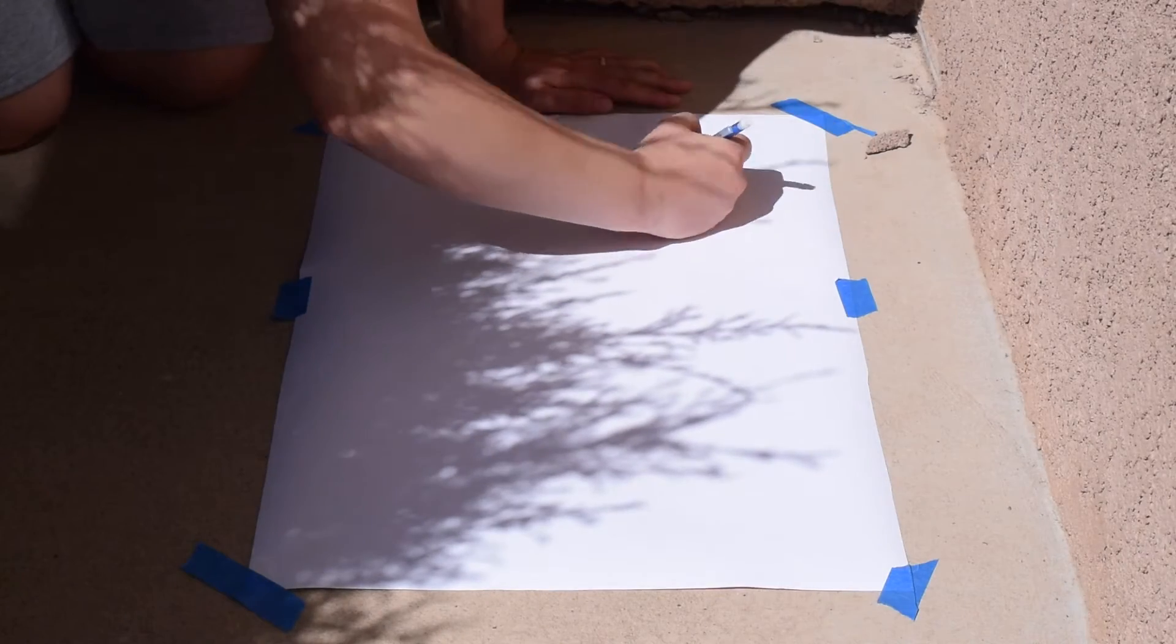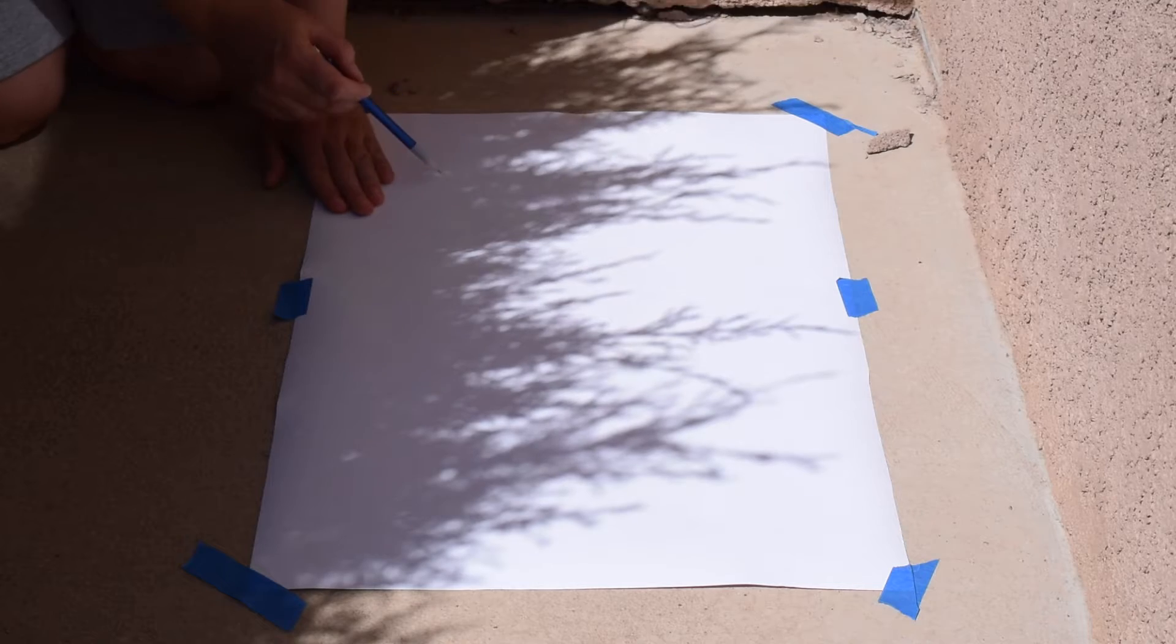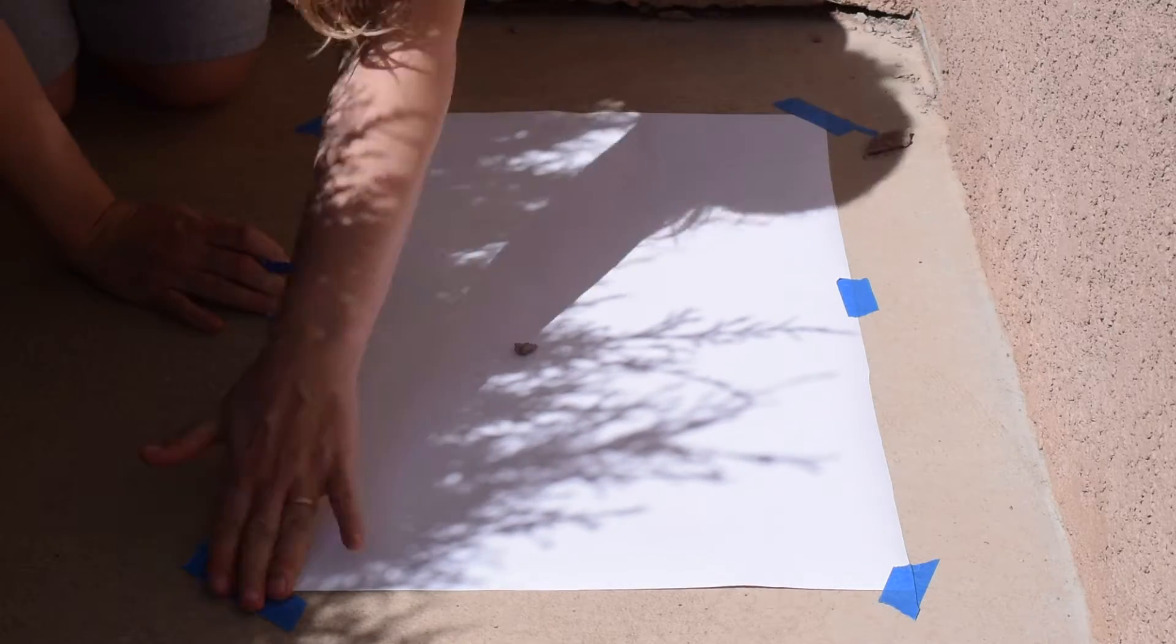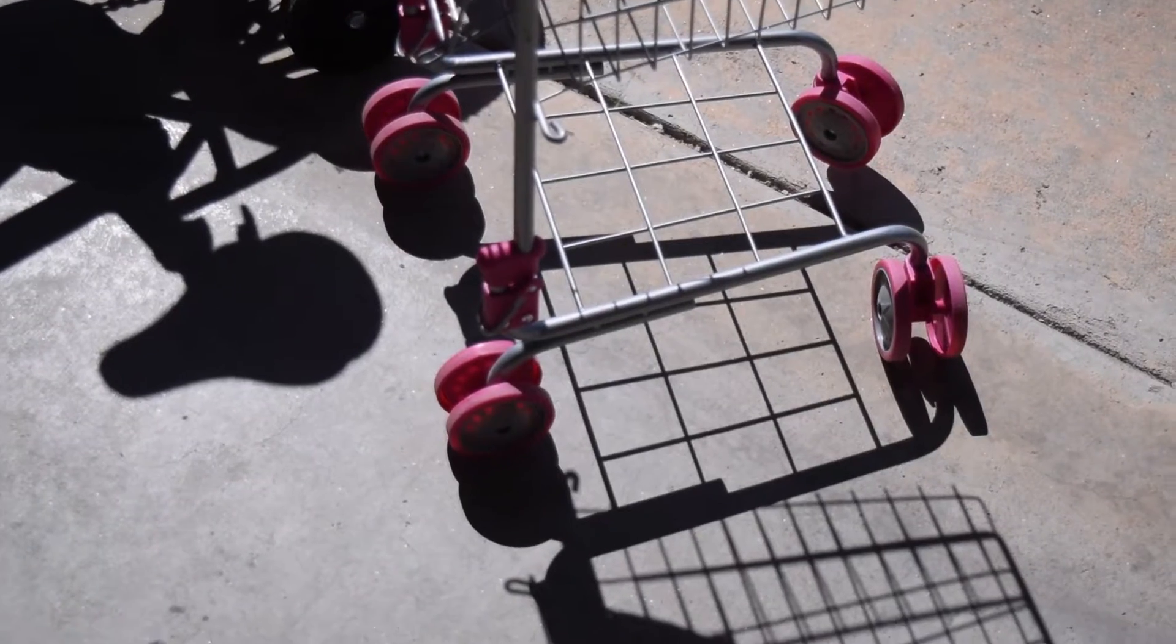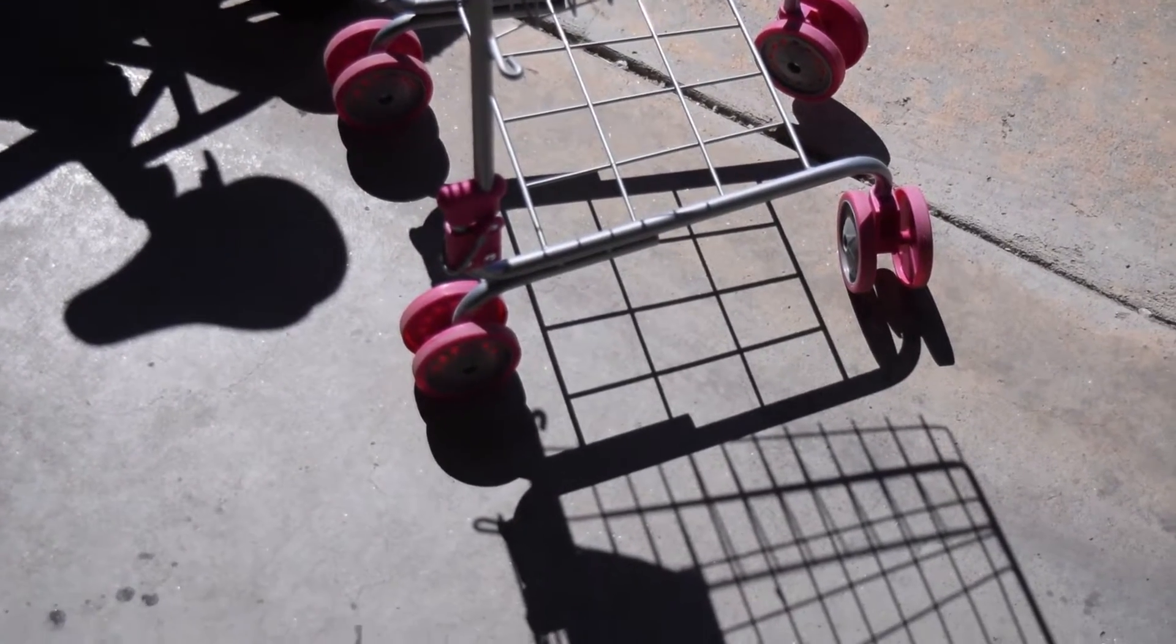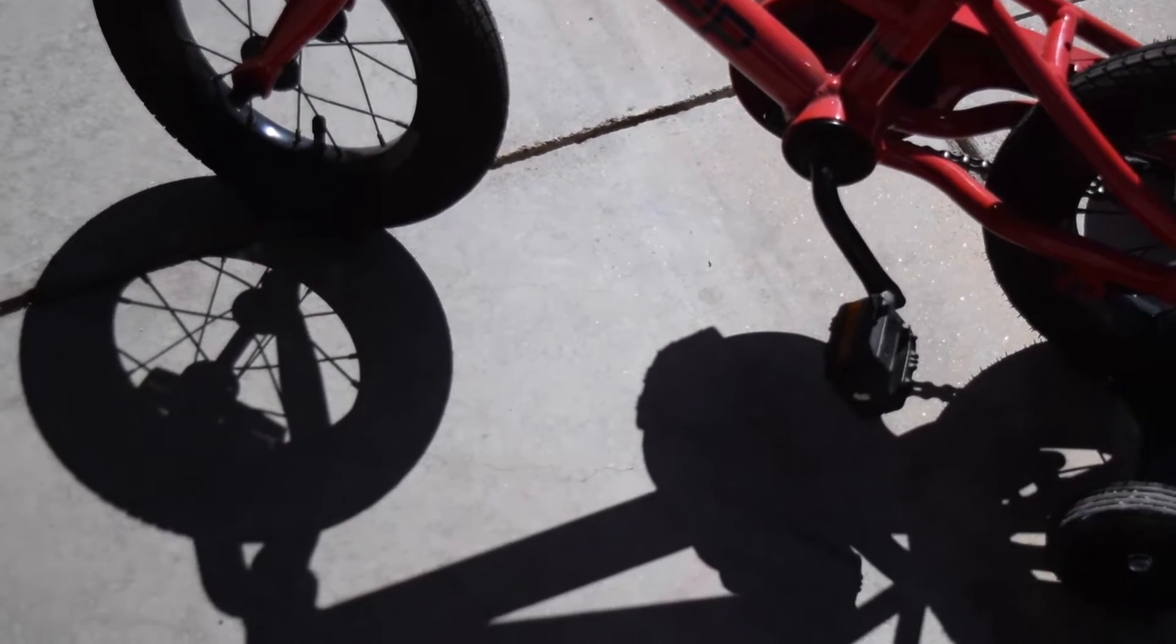For week 5's assignment, you guys are going to be tracing around a cast shadow. You can use artificial light or sunlight to create those cast shadows. Anything that has holes through it that makes interesting silhouettes, like the shopping cart here, or my kid's bike, branches.